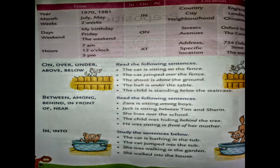Now let's look at the next set: on, over, under, above, below. 'On' is used when something is on top of a surface. 'Over' means above something — for example, over the bridge. 'Under' is used when something is below — for example, under the table. 'Above' is used when something is higher up — for example, above the ground.